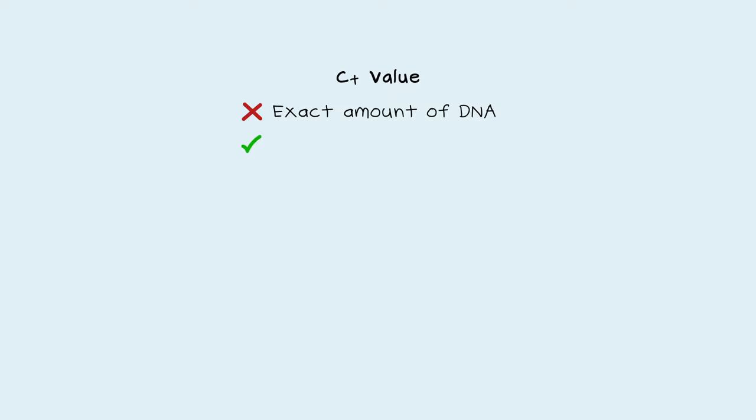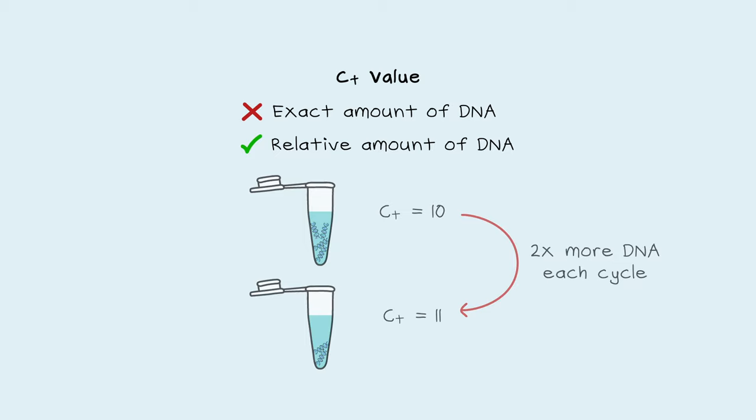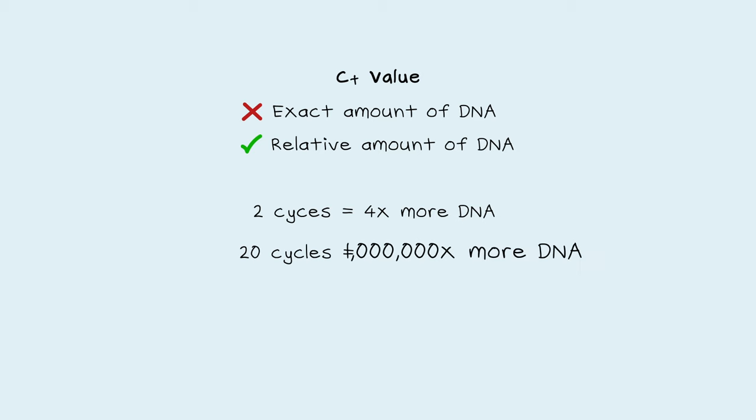For example, a sample with a CT of 10 will have 2 times more DNA than a sample with a CT of 11. That means that a difference of 2 cycles is 4 times more DNA, and 20 cycles is a million times more DNA. So if you want to know the exact copies of DNA in a tube, you need to compare it to a known amount called a standard.